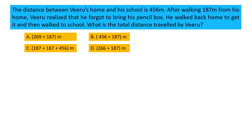The distance between Viru's home and his school is 456 meters. After walking 187 meters from his home, Viru realized that he forgot to bring his pencil box. He walked back home to get it and then walked to school. What is the total distance traveled by Viru? Option A: 269 + 187 meters, Option B: 456 + 187 meters, Option C: 187 + 187 + 456 meters, Option D: 266 + 187 meters.